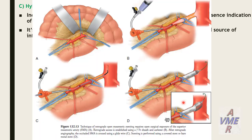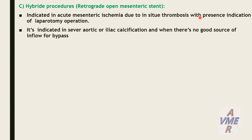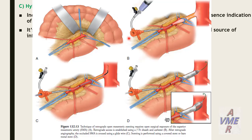The hybrid procedure — retrograde open mesenteric stenting — is indicated in acute mesenteric ischemia with in-situ thrombosis when laparotomy is required, in severe aortic or iliac calcification, and when there is no good inflow source for bypass. After vessel exposure and control of the superior mesenteric artery, a sheath and guidewire are introduced followed by intraoperative angiography, lesion crossing, and precise stent deployment using a balloon-mounted stent.